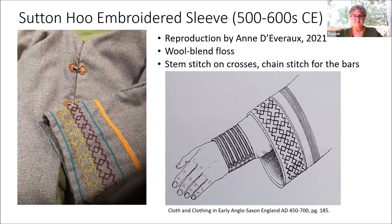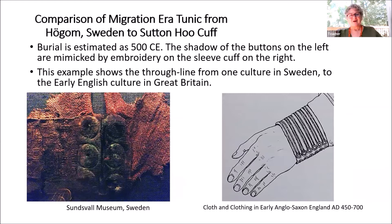In the drawing there are buttons on the cuff — you would think they are buttons, but these could be metal or embroidered, and we're going to compare this migration era tunic from Sweden to the Sutton Hoo cuff. This Swedish burial is estimated to be about 500 CE, contemporary with people migrating to Great Britain. The shadow of the buttons on the left are mimicked by the embroidery of the sleeve cuff on the right, showing the through line from one culture in Sweden to the early English culture in Great Britain.